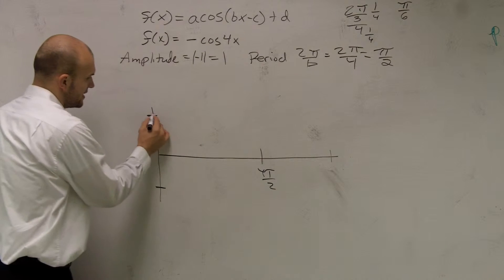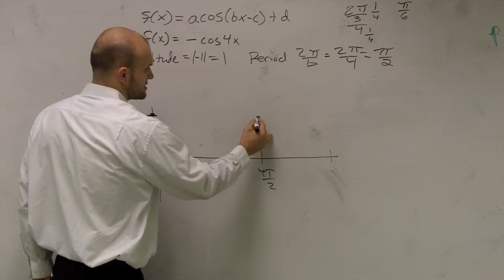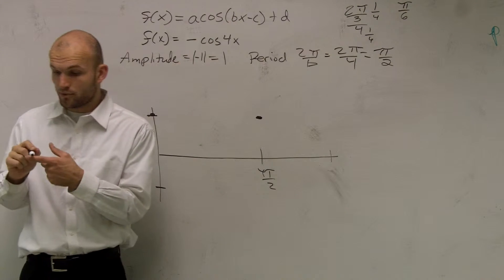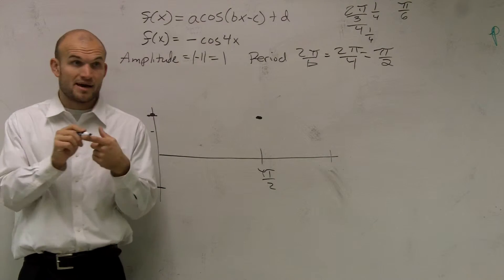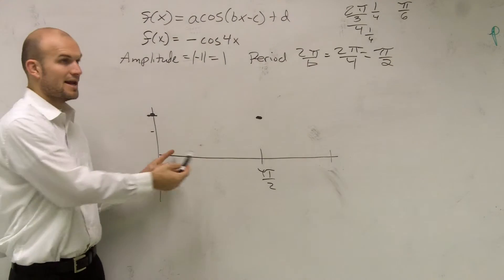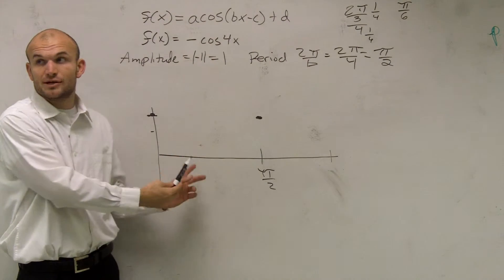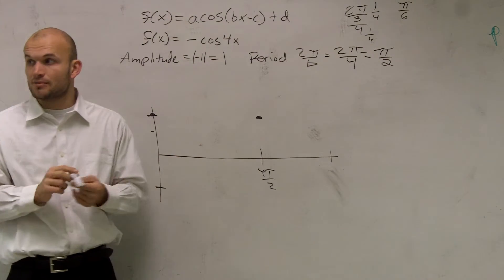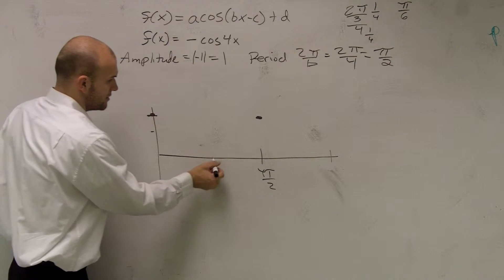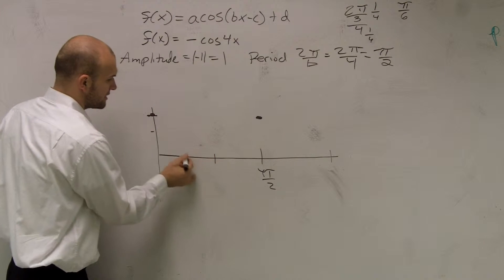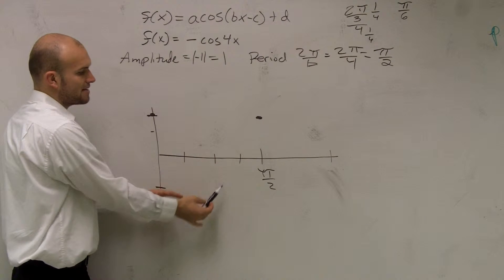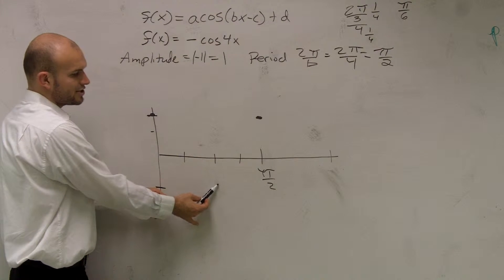That means it's going to start here and end here. However, I need to figure out the other important points — there are four important points. For a cosine graph, you're going to have your two intercepts and your minimum. Either way, we need four important points. We need to figure out what those four important points are. On the cosine graph, these are going to be your two intercepts and your minimum point.